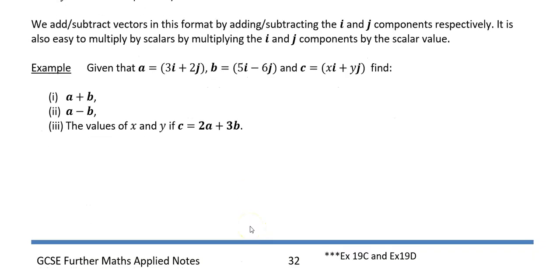In this question it tells you what vector a, vector b and vector c are and it says find the values of a plus b. To add vectors you add the corresponding i parts and the corresponding j parts.